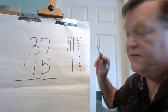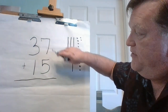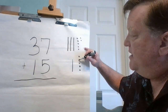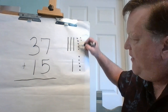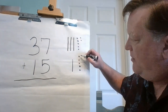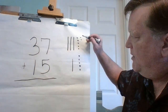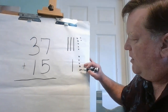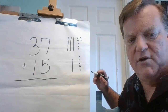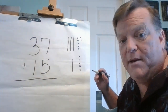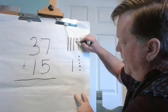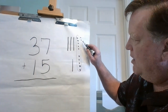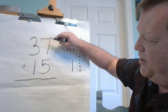So I have seven plus five. Counting them out: one, two, three, four, five, six, seven, eight, nine, ten, eleven, twelve. So we got twelve ones. Because that's more than nine, I'm going to make a group of ten and circle my group of ten right here. So I ended up with twelve — two ones and one ten.